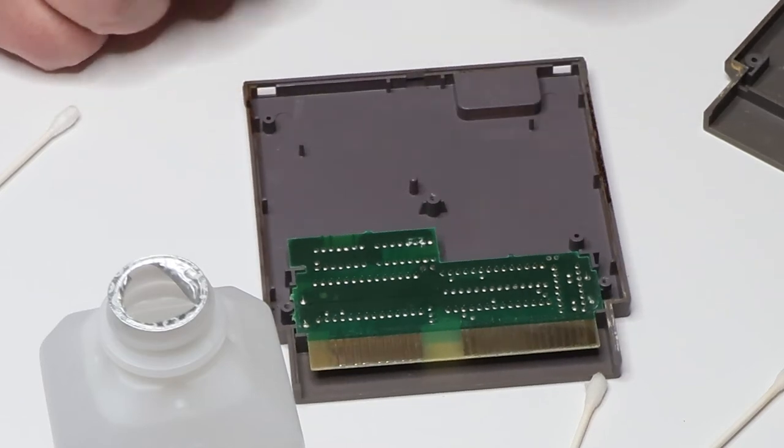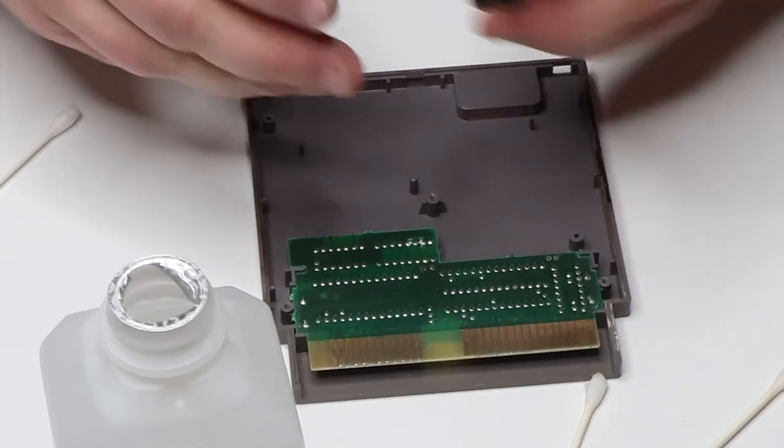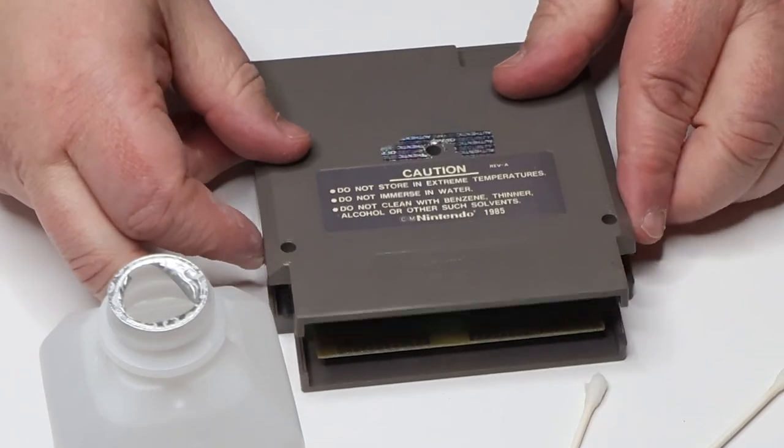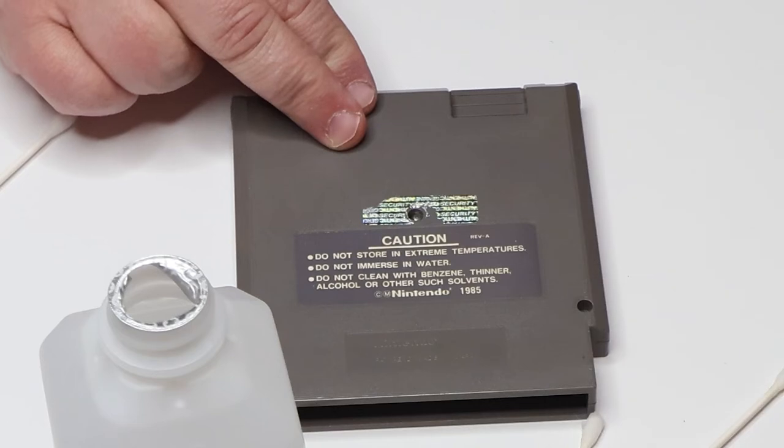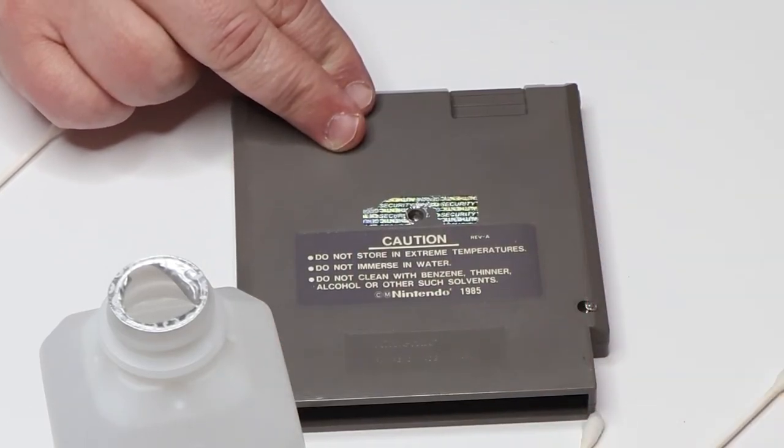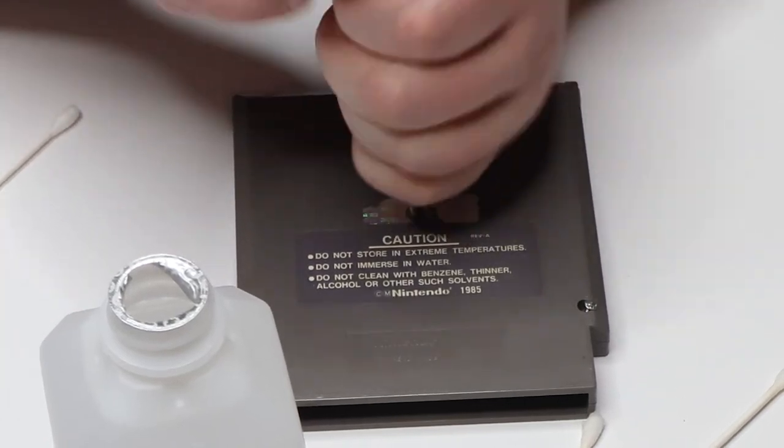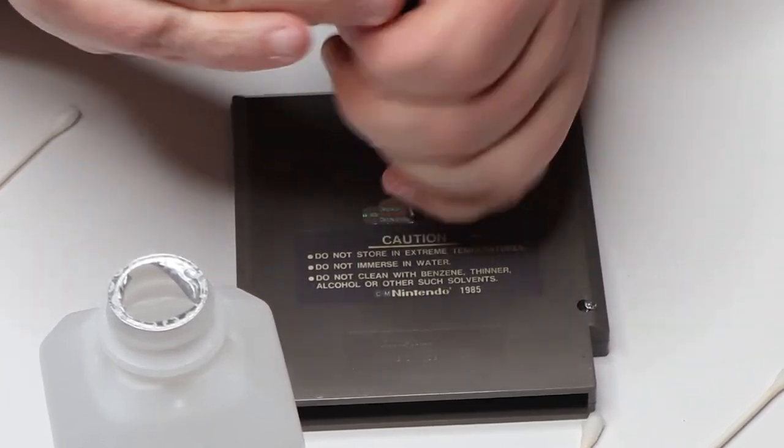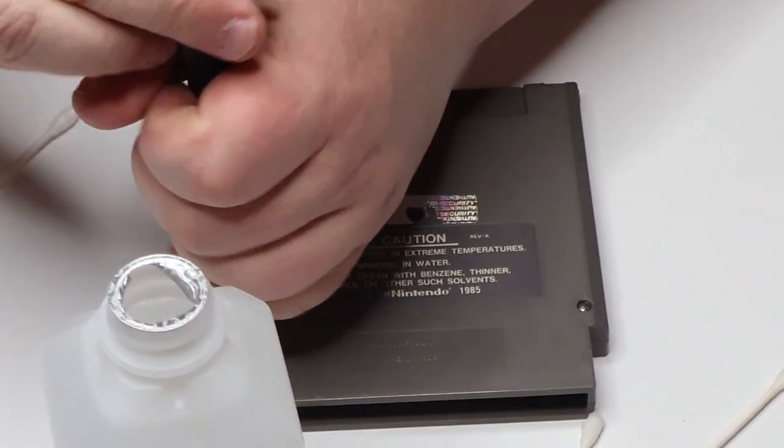So here we're going to put the circuit board back in the case. There's only one way it can go. You can't go wrong with this - it only fits in the correct way. We'll just put the cartridge shell back together. We will reassemble the cartridge by screwing in those three screws. And just like that, we now have a cleaned NES cartridge.